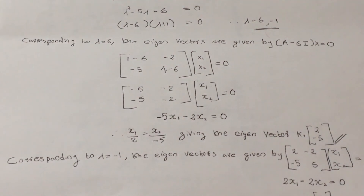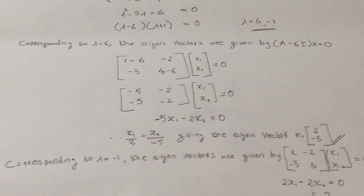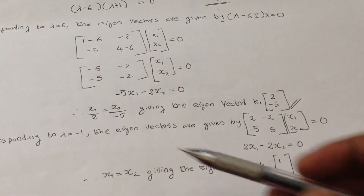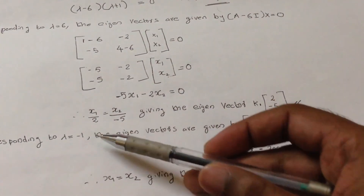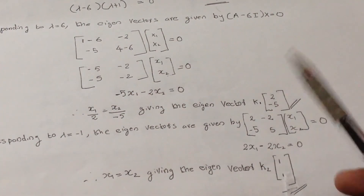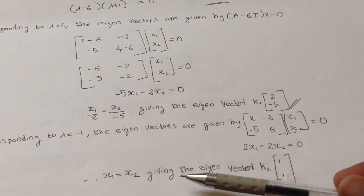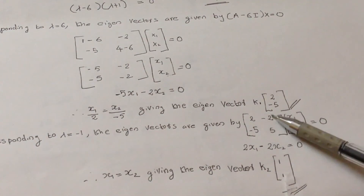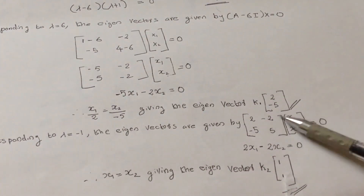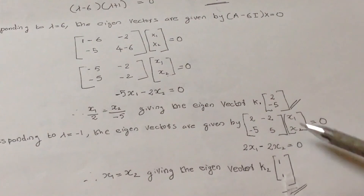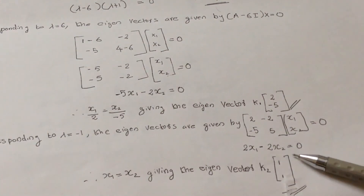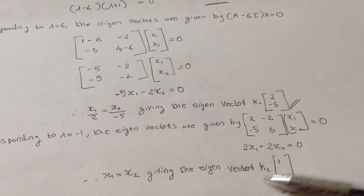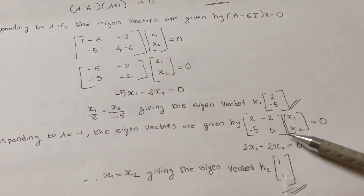Similarly, for lambda equals minus 1, we apply the same process. We get 2x1 minus 2x2 equals 0, so x1 equals x2, giving the eigenvector k2 equal to [1, 1].